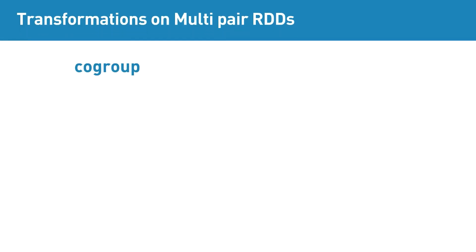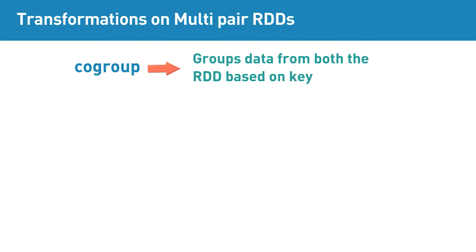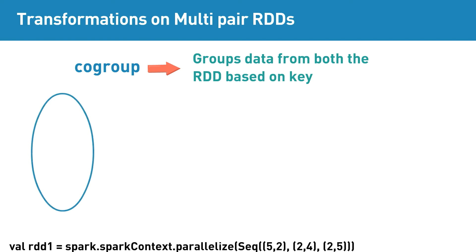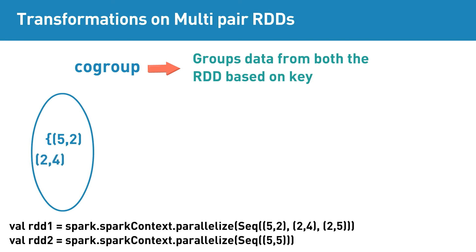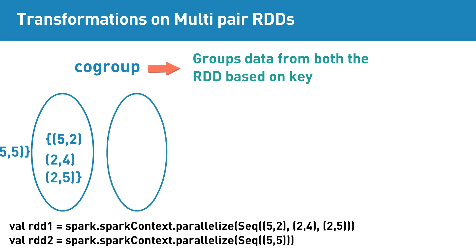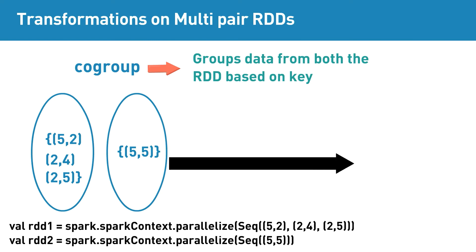Cogroup is a multi-pair RDD transformation that groups data from both RDDs based on key. For an instance, if input RDD1 contains elements 5-2, 2-4, 2-5, and input RDD2 contains 5-5, then applying co-group transformation will return elements as highlighted.